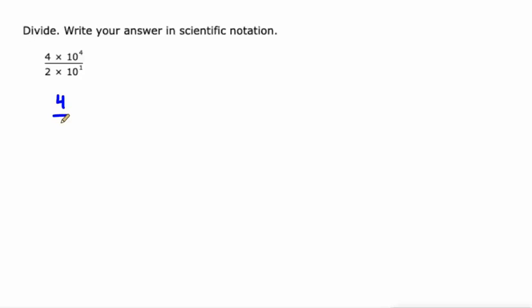So we can look at this as two fractions being multiplied by each other: 4 halves times 10 to the 4th over 10 to the 1st. 4 times 10 to the 4th is our numerator. 2 times 10 to the 1st is our denominator. Just numerator times numerator, denominator times denominator. That's how you multiply fractions.